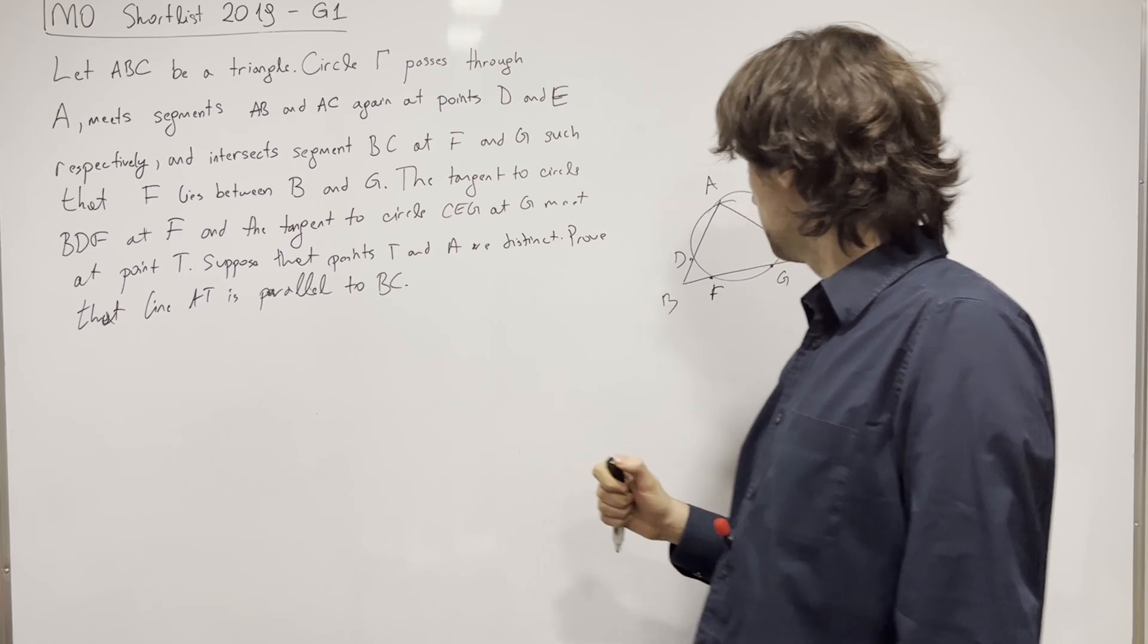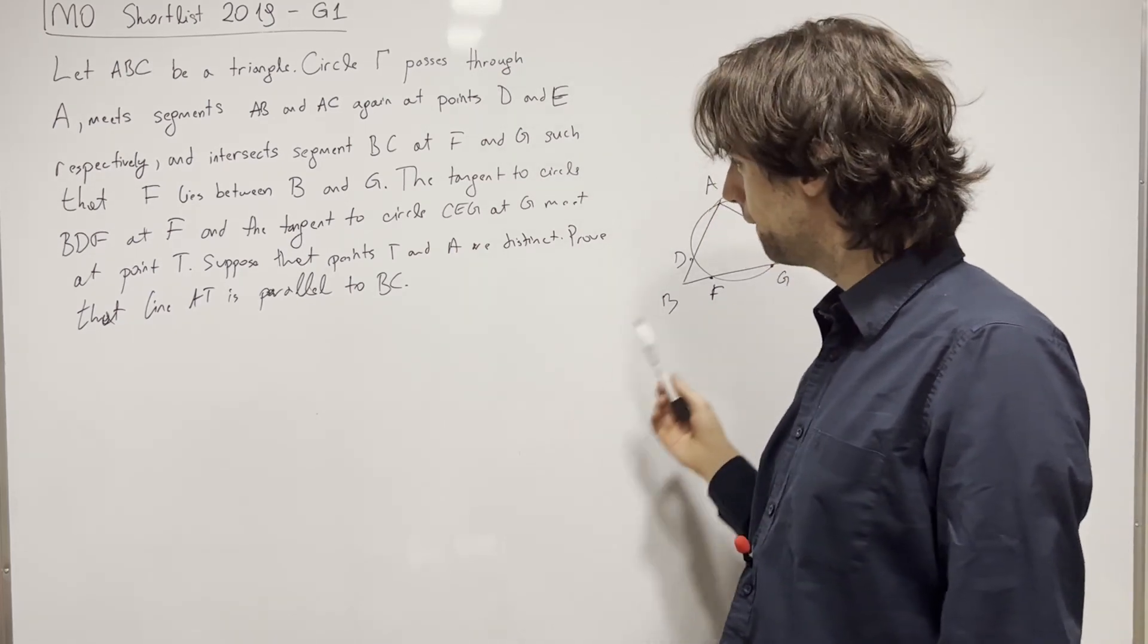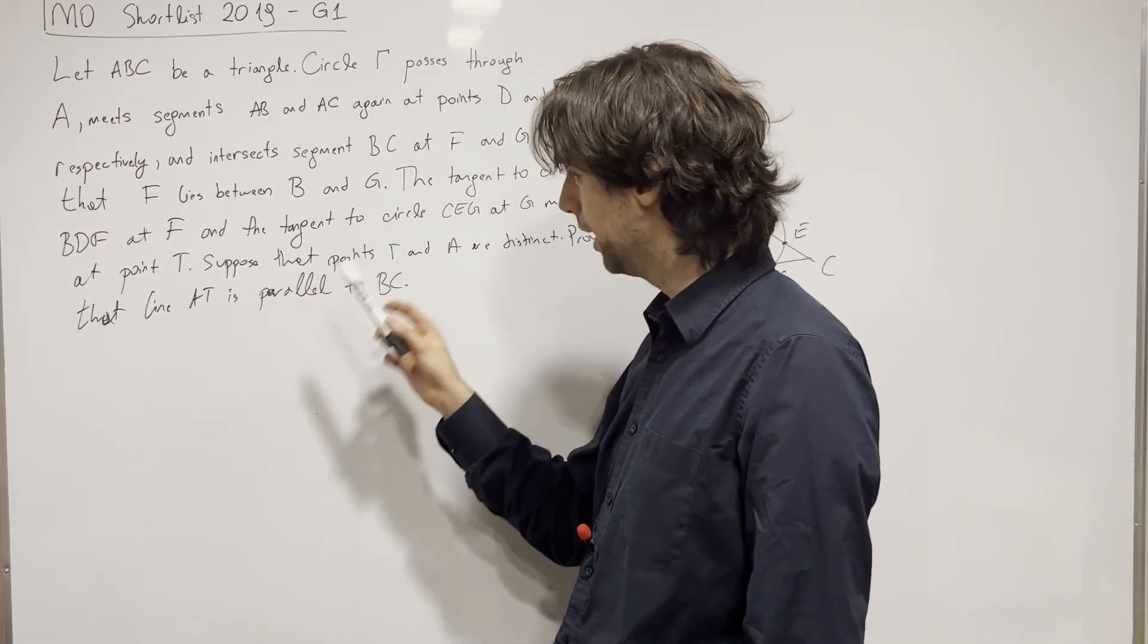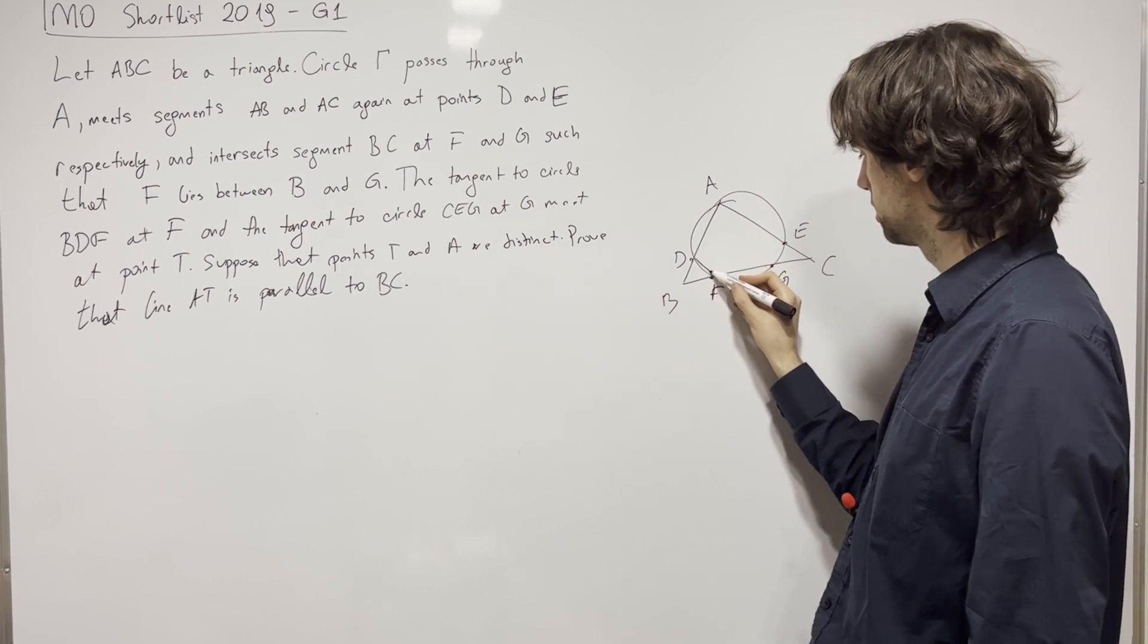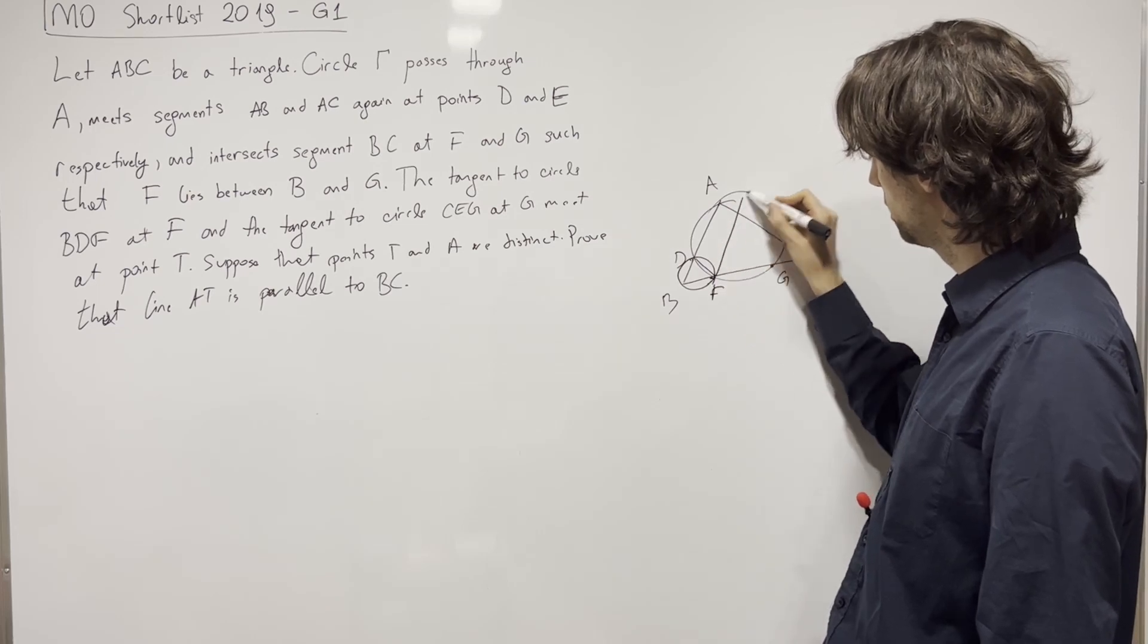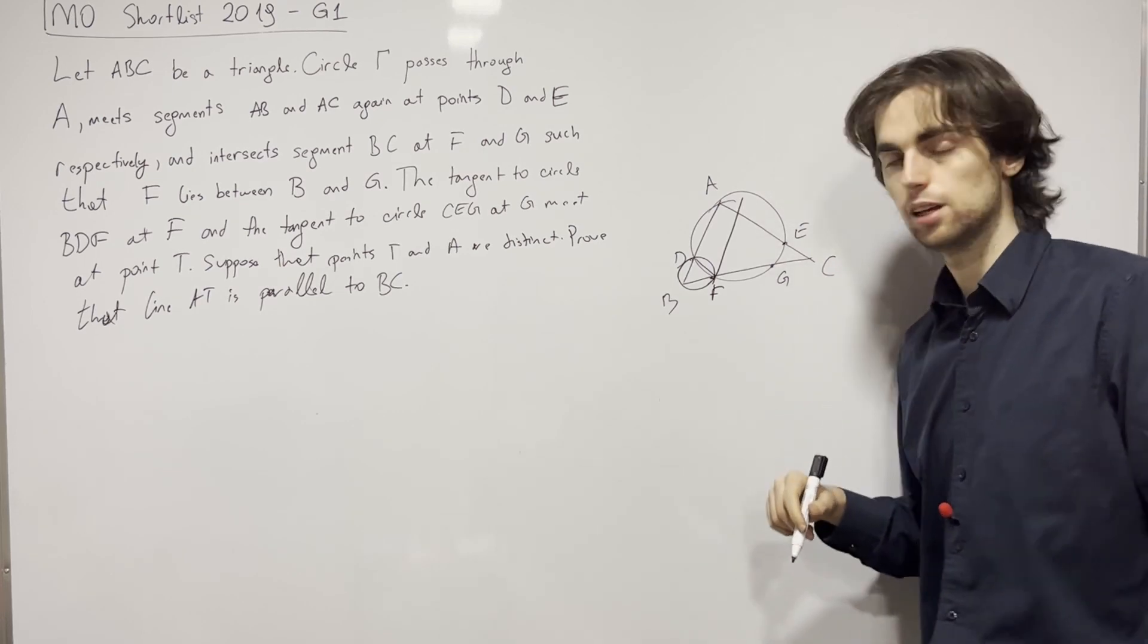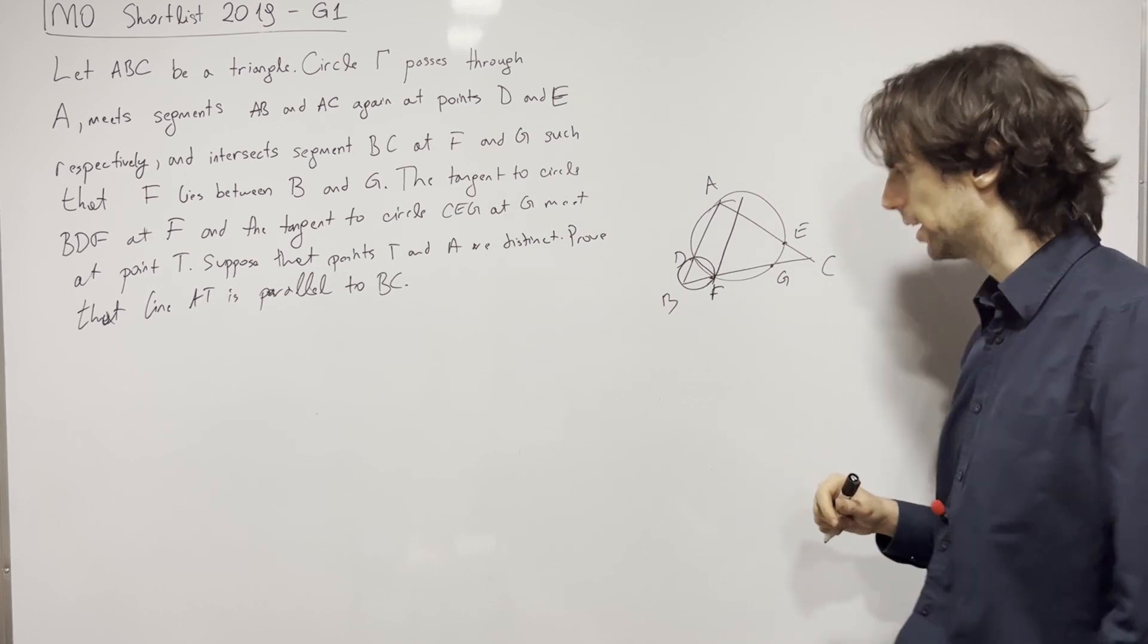Now we have these tangents to D, B, F at points. F and C, E, G at G. So I have this circle, and I think it's tangent. And I take the tangent through G. And they should meet at a point T, prove that AT is parallel to BC. Okay, so we can go at this problem two ways.